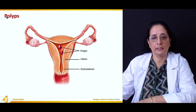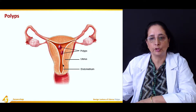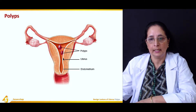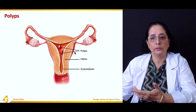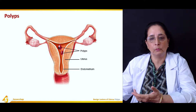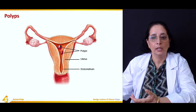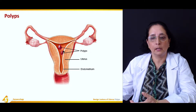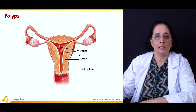In this diagram you can see polyps present inside the uterine cavity. This is the uterus endometrium lining, and inside the body or cavity you can see the polyps. Polyps are growths which are attached to the wall. If they are attached with the help of a stalk they are known as pedunculated polyps, and if there is no stalk they are known as sessile polyps.